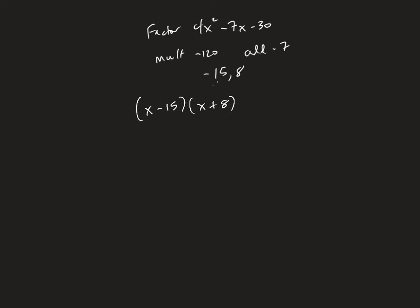And 8 times -15 is clearly not -30. So this is not the right answer. However, what we're going to do is take this A term and divide the two numbers that are sitting there by that number.